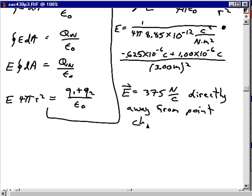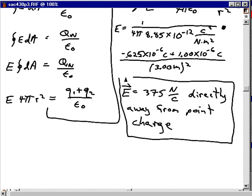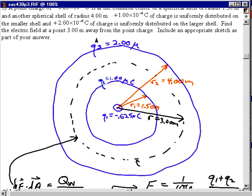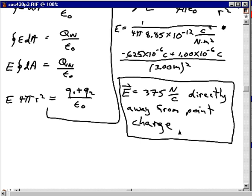I can't be overly specific with the direction because the point that was 3.00 meters away from the center of the circle, the point at which I was supposed to calculate away from the point charge, was not specified. It could be anywhere on this sphere. But the electric field is going to be directly away from the point charge.